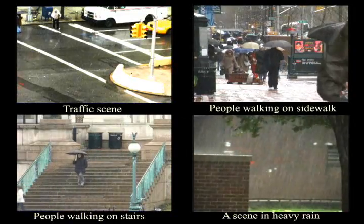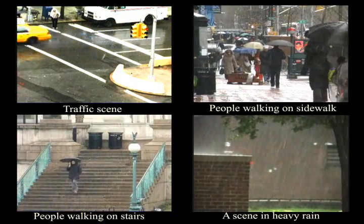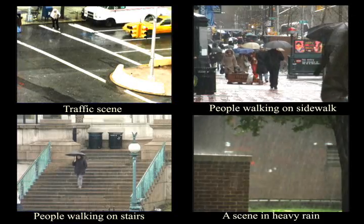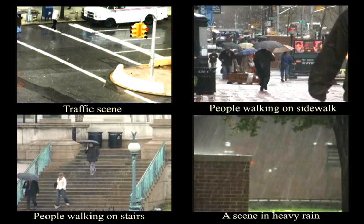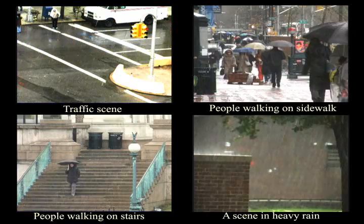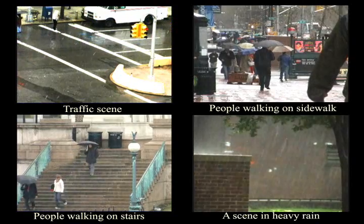In this work, we have developed a method for selecting the camera parameters so as to reduce the visual effects of rain without altering the appearance of the scene. Here we see several videos taken with the default camera settings of a Canon XL1 video camera. Notice that the visual effects of rain are strong in all cases and would adversely affect the performance of vision algorithms.